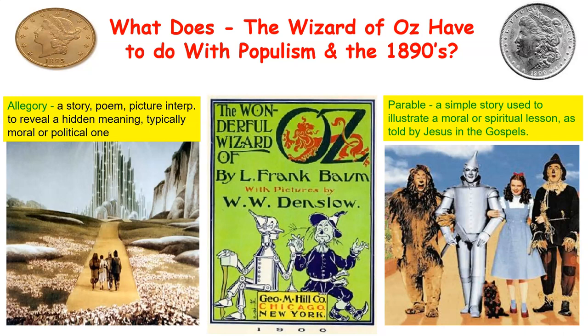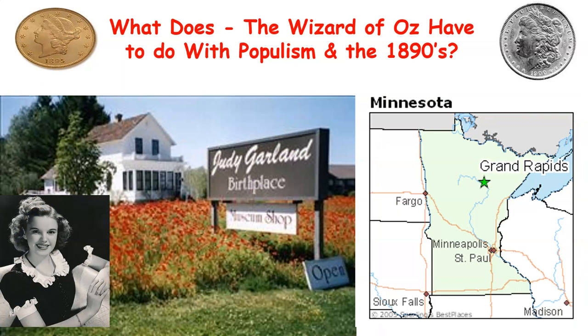If you have a hard time remembering some of the ideas and who stands for what, check out The Wizard of Oz — a book written in this time period as a little allegory. At the end of your left-hand side notes, try matching up characters in the film to people, issues, and things from this time period.